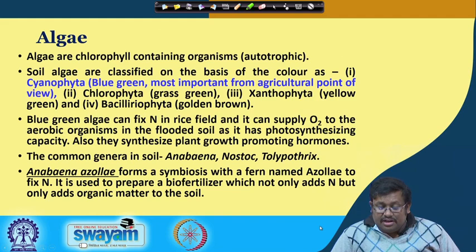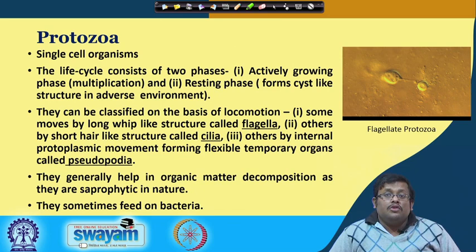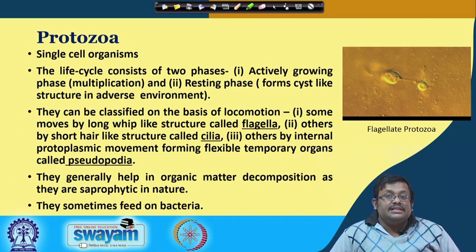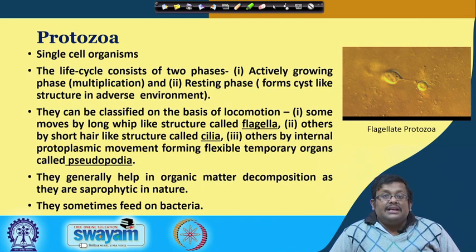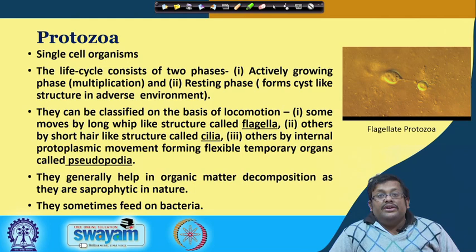Next, let us talk about soil micro fauna — protozoa. They are basically single-celled organisms. However, the life cycle consists of two phases: the actively growing phase involving multiplication, and the resting phase where they form cyst-like structures in adverse environments to protect themselves. They can be classified on the basis of locomotion: some move by long whip-like structures called flagella, others by short hair-like structures called cilia, and others by internal protoplasmic movement forming flexible temporary organs called pseudopodia.